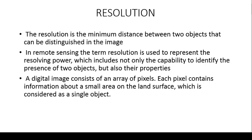In remote sensing, resolution is used to represent the resolving power, which is the capability of identifying two different objects. If two different nearby objects or phenomena are clearly classified or identified, then we have a perfect resolution of the sensor used in a particular satellite. A digital image consists of pixels, and each pixel contains particular information about objects, representing the clarity of that object.